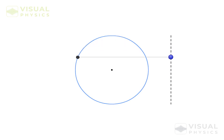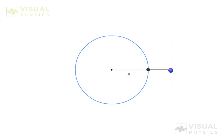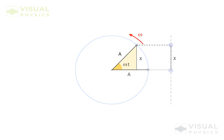Let us say that the angular speed of a particle moving along a circular path of radius A is equal to ω. If the particle starts from this position, then after time t, its angular displacement will be equal to ωt, and this distance x will be equal to A sin(ωt), which is in fact the equation of an SHM.